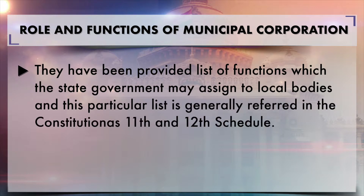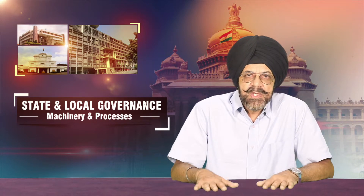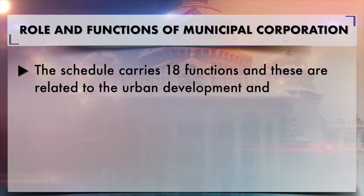It is only after the 73rd and 74th Amendment Acts for the urban areas that these local bodies got constitutional status. They have been provided a list of functions which the state governments may assign to local bodies. This list is generally referred to as the 12th Schedule of the Constitution for the urban areas.